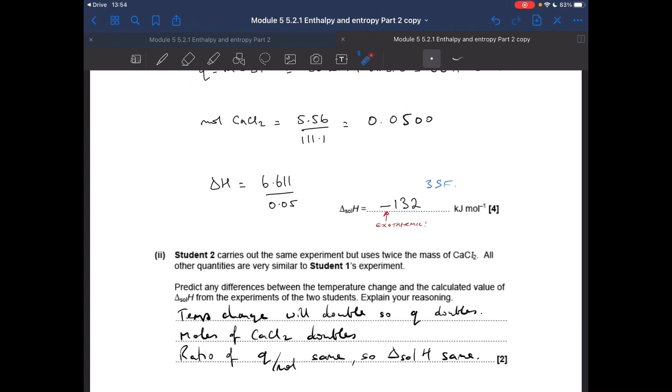Next part, student 2 carries out the same experiment, uses twice the mass of CaCl2. All of the other quantities were very similar to student 1. Predict any differences between temperature change and the calculated value of delta H, so explain your reasons. So temperature change will double because they're using twice the mass of the chemical in the same quantity of water. So the temperature change will double, so that's going to double Q.